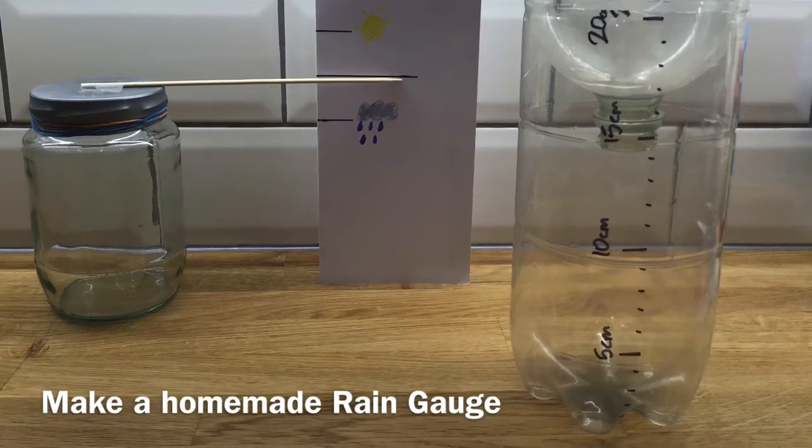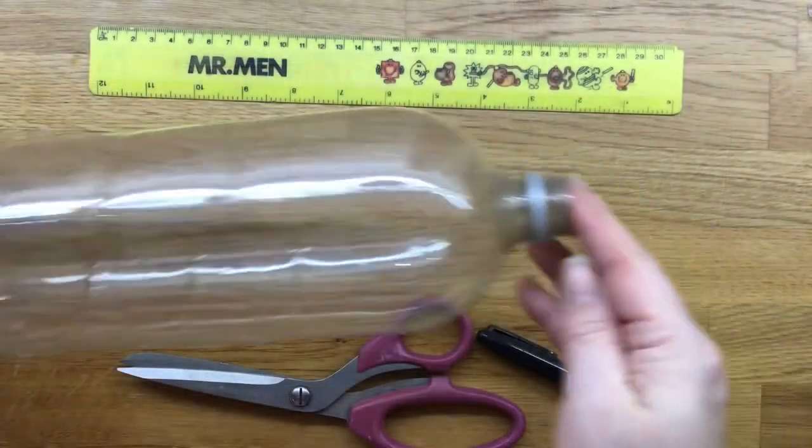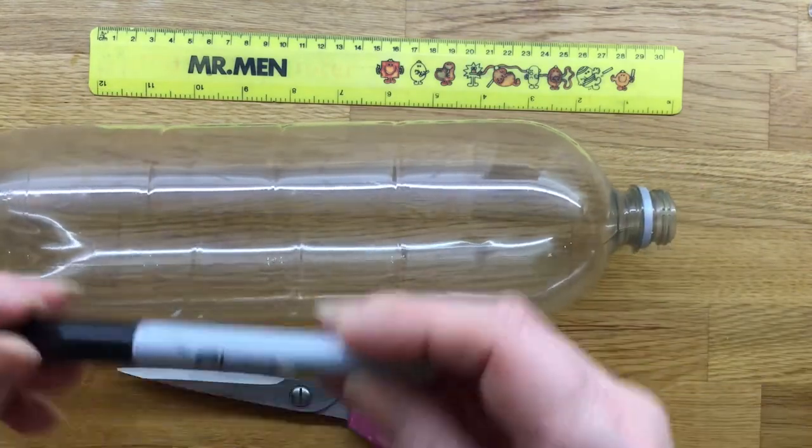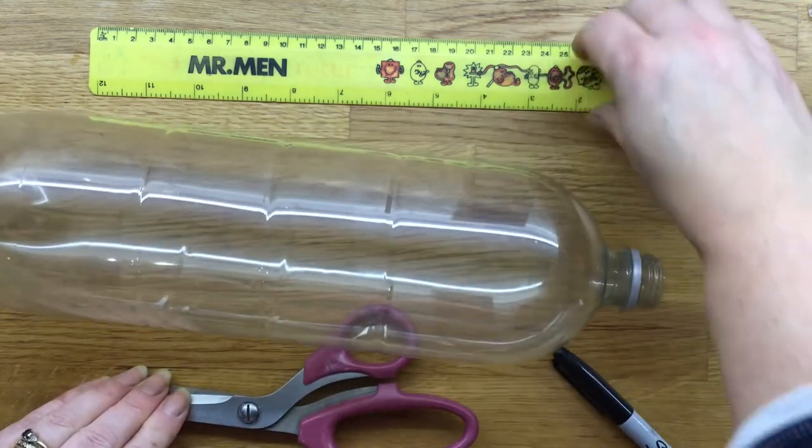Next as part of your weather station we're going to make a rain gauge that measures rainfall. You will need an old plastic bottle, a permanent pen, a pair of scissors and a ruler.